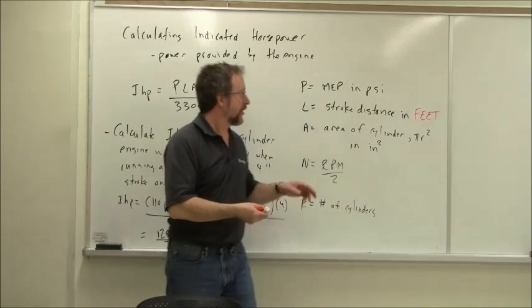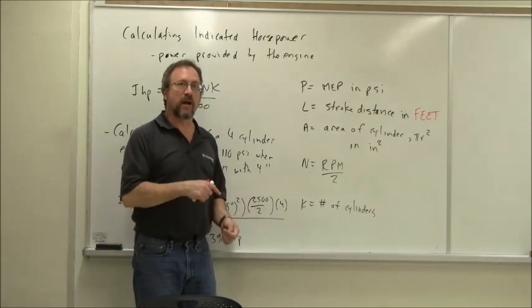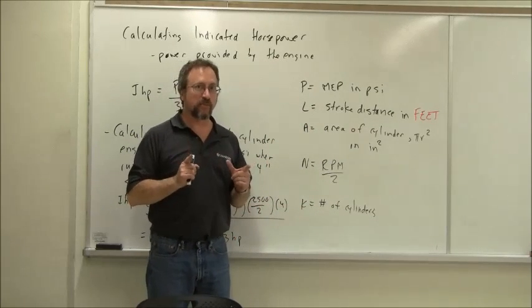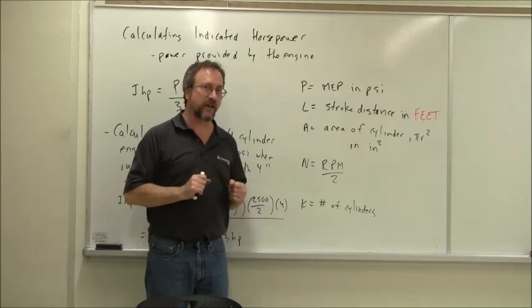A, that's the area of the cylinder, pi r squared. You've got the bore - remember the bore is the diameter of the cylinder - you'd have to divide the bore by 2.